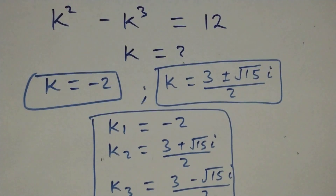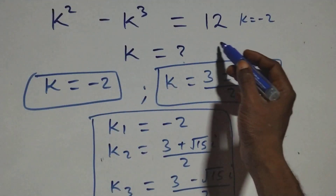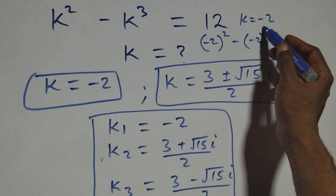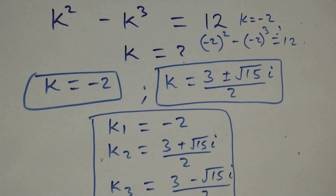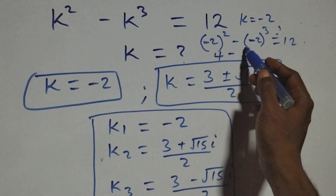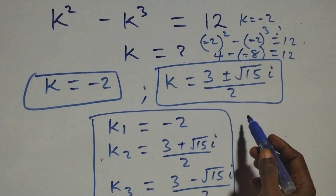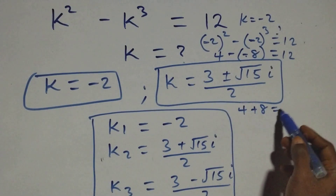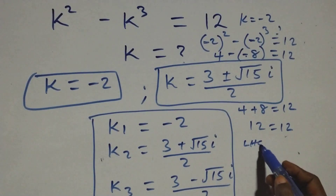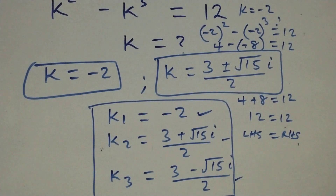You can check: for k equals minus 2, when we substitute k equals minus 2, we have (minus 2) squared minus (minus 2) cubed equals 12. Minus squared turns to plus: minus 2 squared is 4. Then minus, and minus 2 cubed is minus 8, so we have 4 minus (minus 8). Then minus times minus turns to plus, so we have 4 plus 8 equals 12. And 4 plus 8 is of course 12, so the left-hand side equals the right-hand side. Minus 2 satisfies this given problem, and likewise these two complex solutions also satisfy. Thank you.